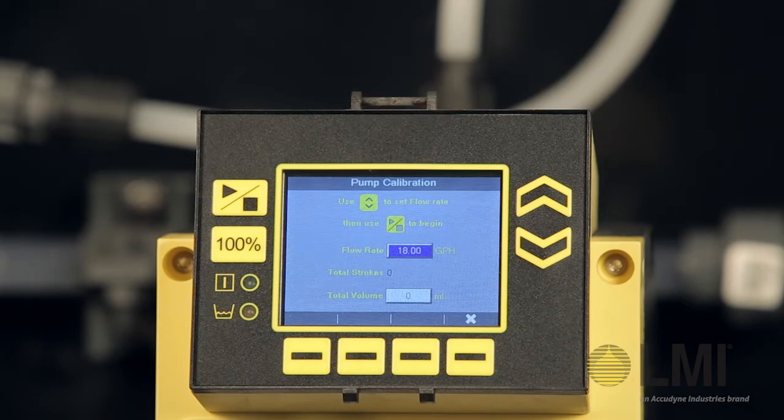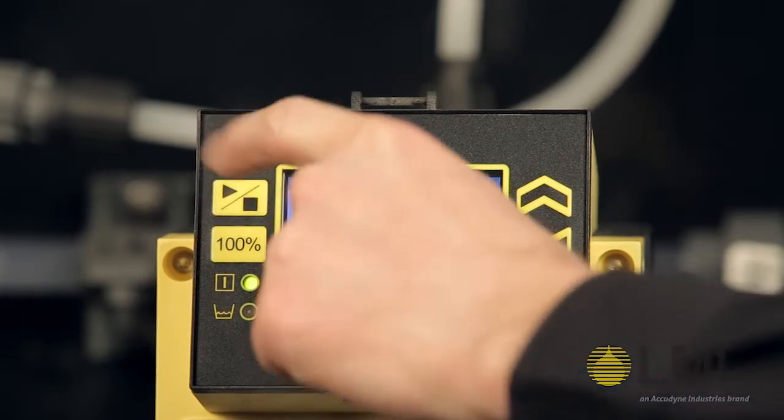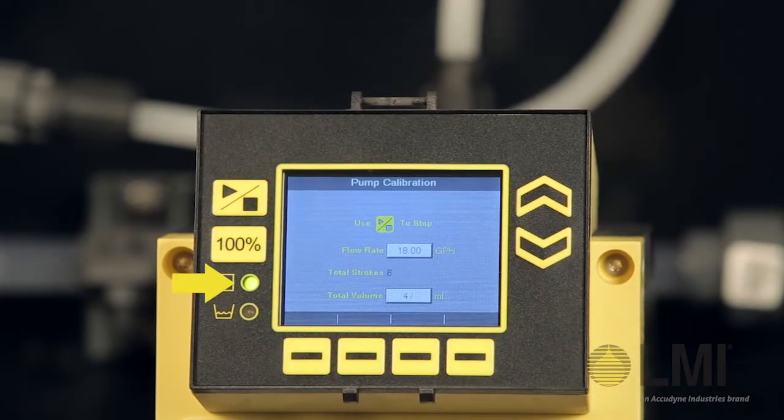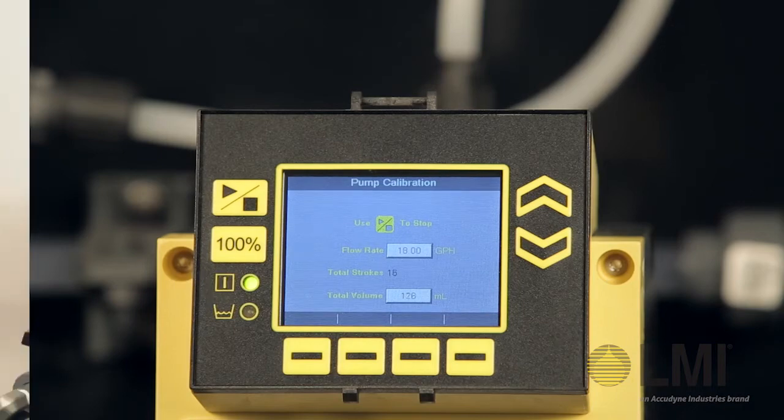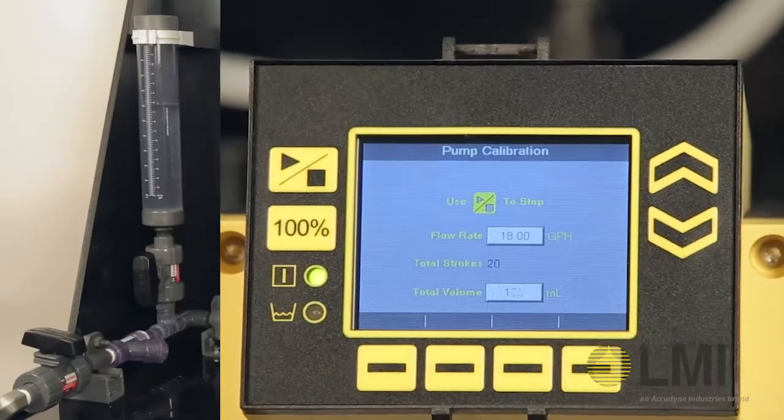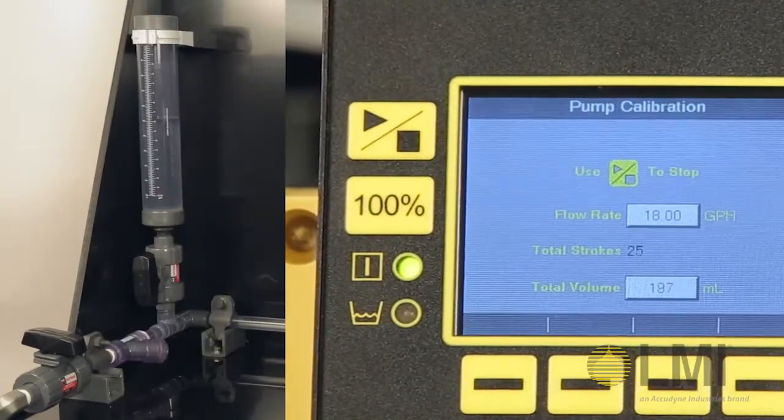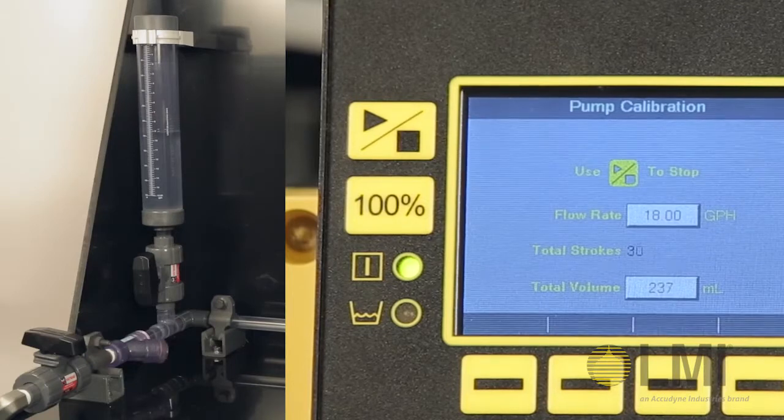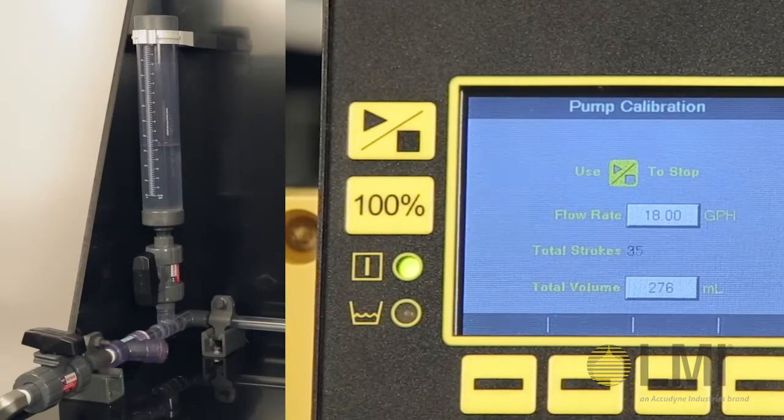Press the Start-Stop button on the left side of the display to start the pump. The green LED power light will illuminate to show the pump is now operating. While the pump is pumping, the stroke count and total volume on your display will increase, and fluid will begin to empty from the calibration cylinder.